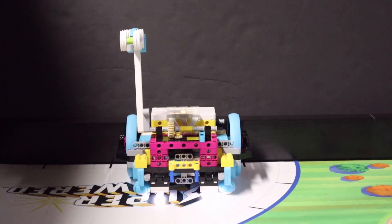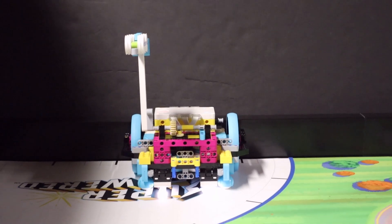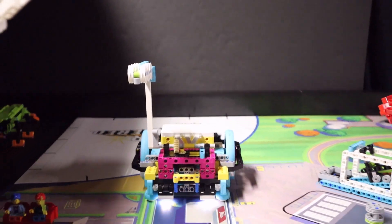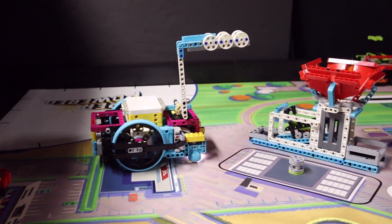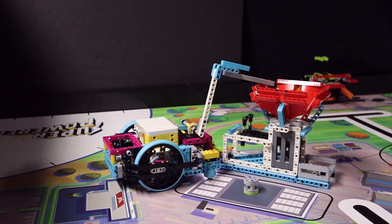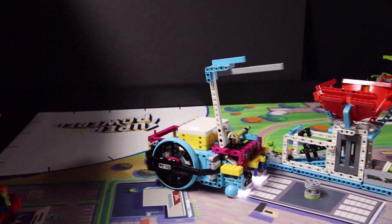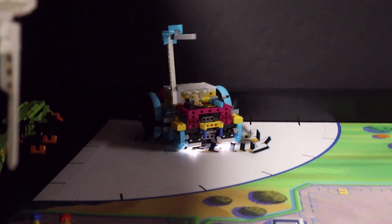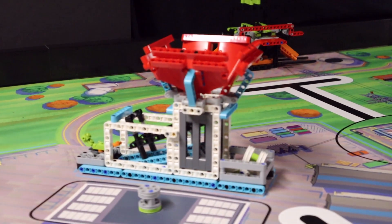For our Spike Prime solution we launch our robot from the right launch area and approach the hopper from the east. When the robot is positioned in front of the mission model it lowers the attachment. Now the energy units slide off the beam and into the hopper. The first energy unit that falls in releases the mini dinosaur.